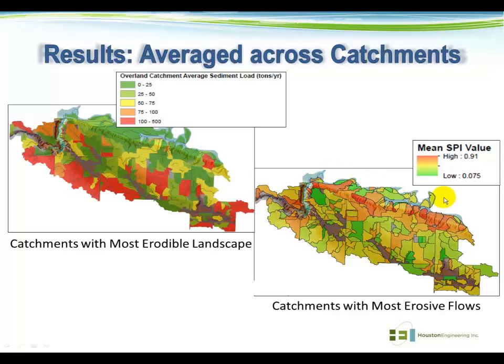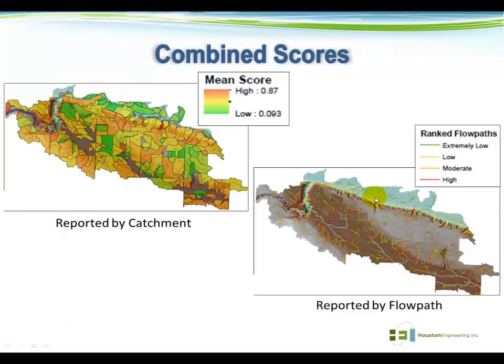In this study the Minnesota River Valley runs along the upper part of the figure, and we can see that most of the red sub-basins fall along the bluff or ravine coming down into the floodplain, which makes sense. We can also combine those scores at the catchment level — looking at where we have both highly erosive flows and erodible landscapes — and compute a mean score for each catchment to prioritize general areas for implementation. Finally, we can take this down to the flow path level to look at which specific flow paths to prioritize. It all depends on the project objectives, what type of BMPs you're implementing, and what issues you want to address.